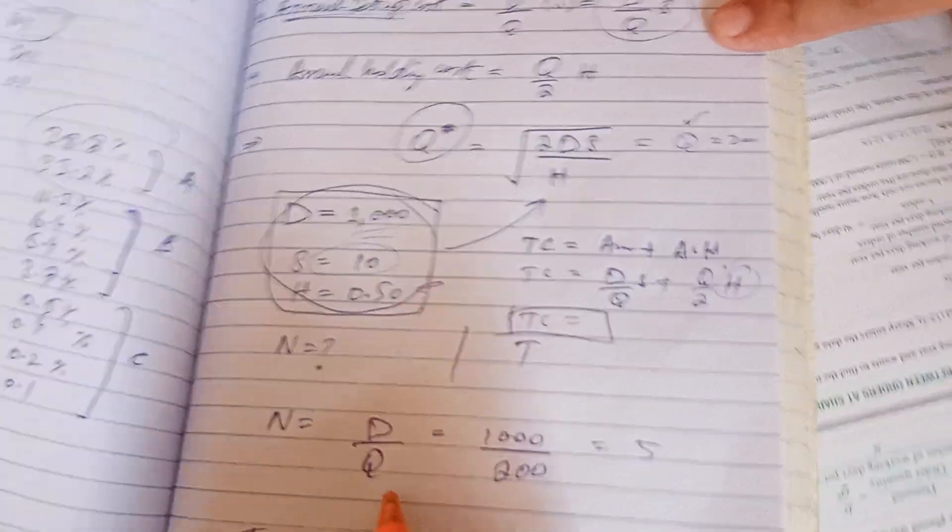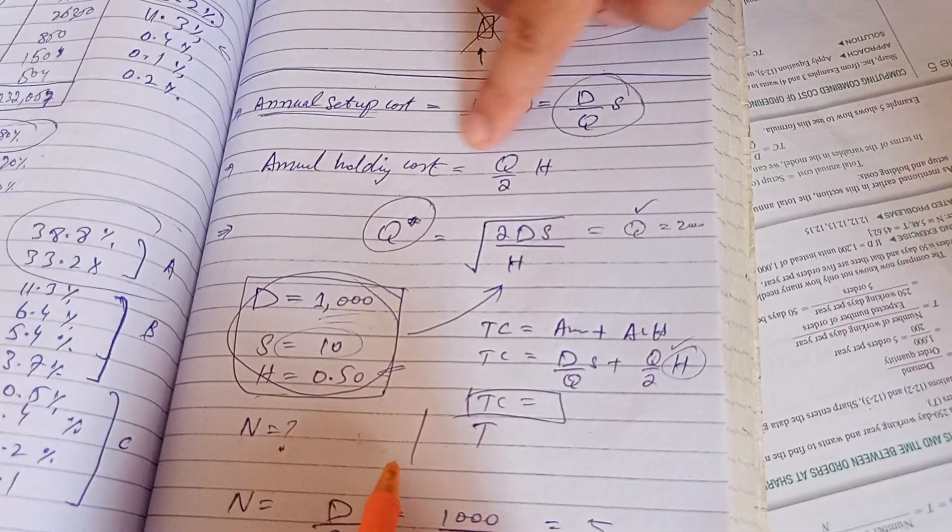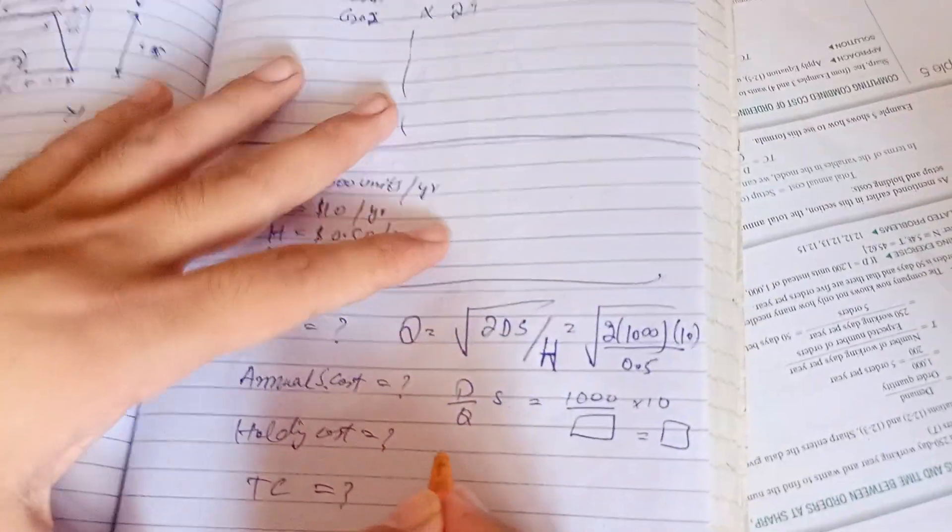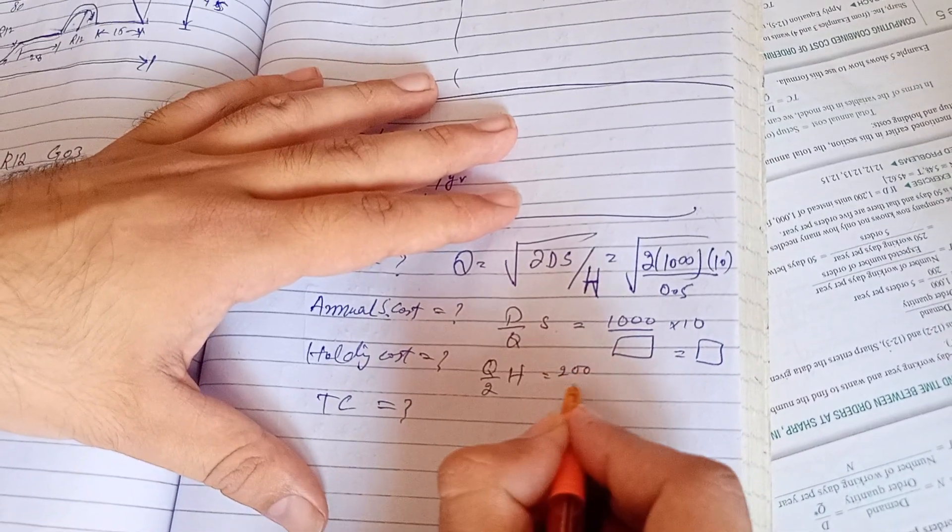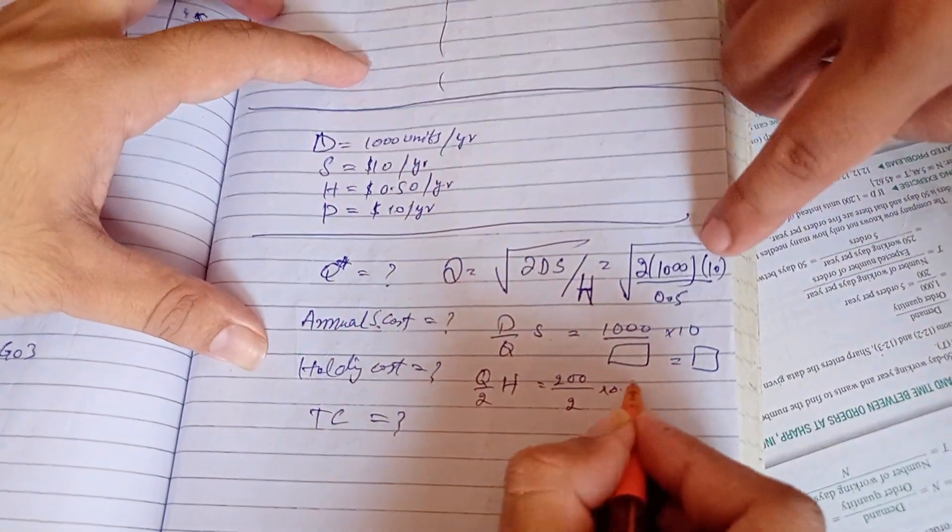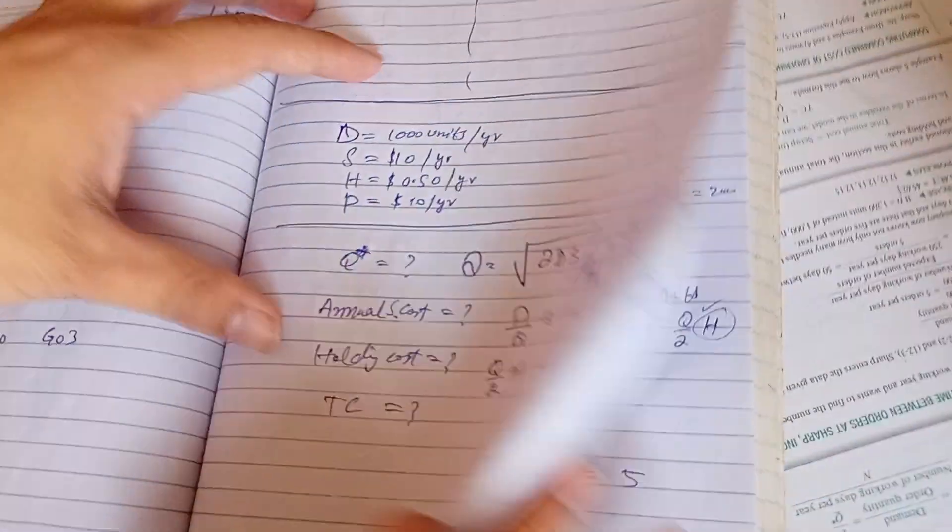This is holding cost. Holding cost formula: Q divided by 2 times H. H is 0.5. From the Q, 200, then find the Q.